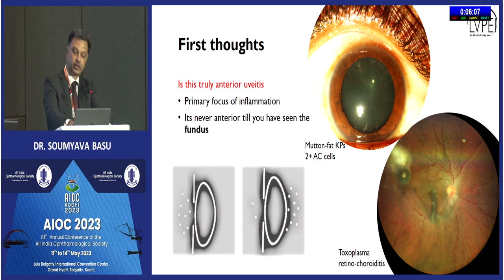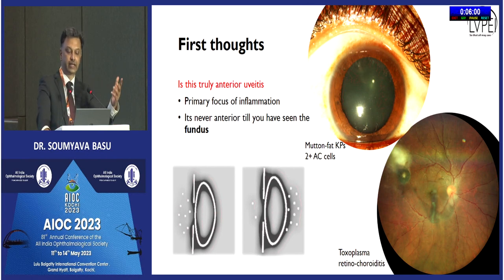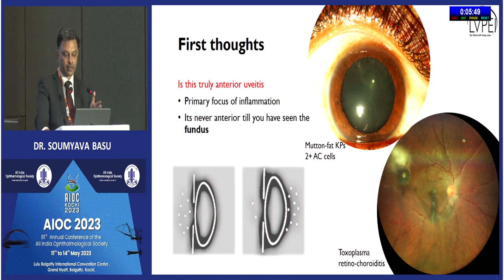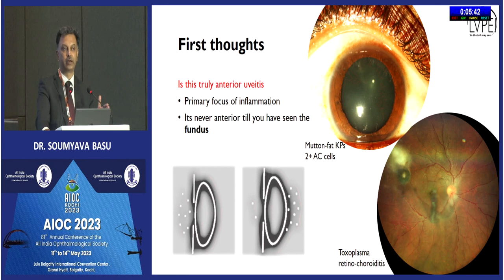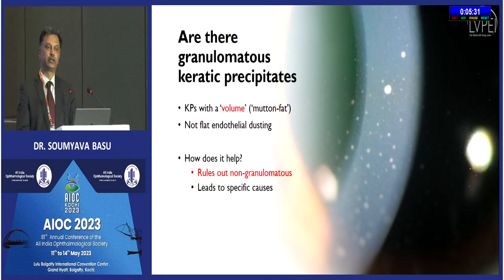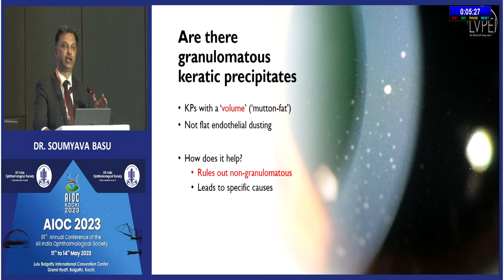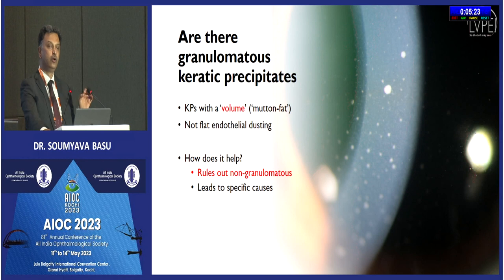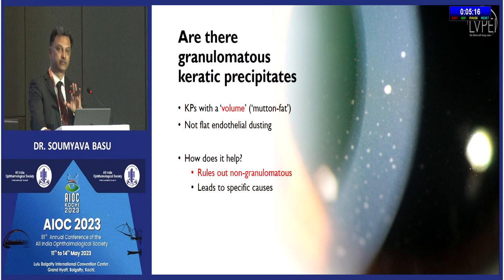Another point: we often talk about spillover inflammation, but remember it is the cyclitis that leads to inflammation in the vitreous seen in anterior uveitis patients. Once you have confirmed the focus is in the anterior segment, look for granulomatous keratic precipitates — KPs with a volume and not just flat endothelial dusting. This helps in ruling out non-granulomatous disease. However, there is an important caveat: all granulomatous anterior segment inflammation can start and end as non-granulomatous. If the patient was already started on topical steroids, KPs would have resolved, giving a false impression of non-granulomatous disease.